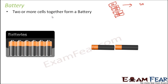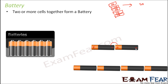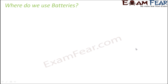How are cells connected to form a battery? It is always ensured that the positive terminal of one cell is connected to the negative terminal of the next cell, and so on. We always need to make sure that the positive terminal of one cell is connected to the negative terminal of the other cell. In this way, two or more cells can be connected together to form a battery.